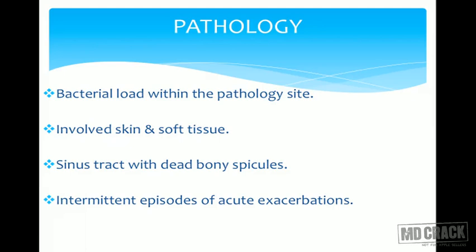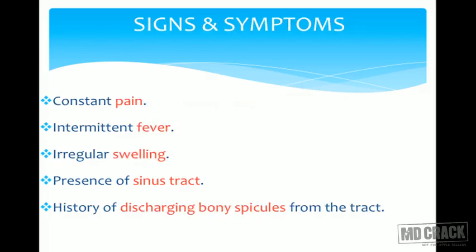In the pathology of chronic osteomyelitis, the bacterial load within the pathological site is one reason for persistence. The involved skin, soft tissues, and sinus tract with dead bony spicules are important. Bony spicules are very characteristic of this disease and are not seen in the acute form. Intermittent episodes of acute exacerbation may occur. Signs and symptoms include constant pain, intermittent fever, irregular swelling, presence of sinus tract, and history of discharging bony spicules.